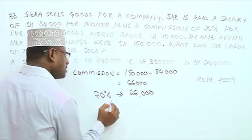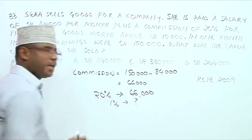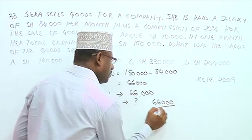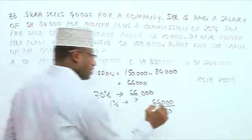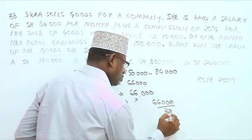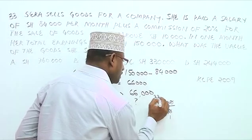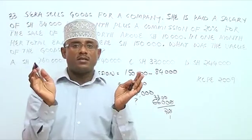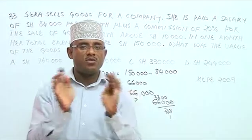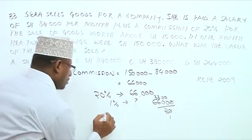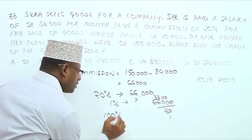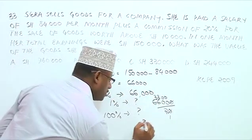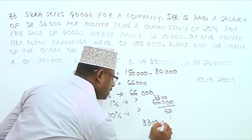If 20% of the commissionable sales is $66,000, then 1% is $66,000 divided by 20, which equals $3,300. To find 100% — the total commissionable sales — we multiply $3,300 by 100, giving us $330,000.